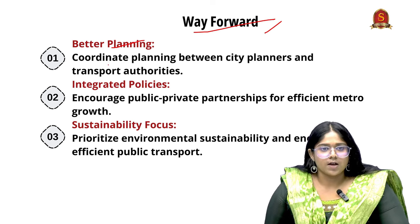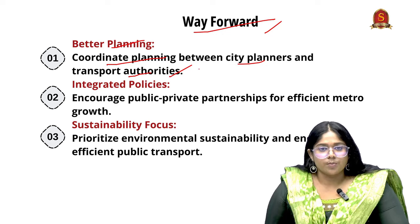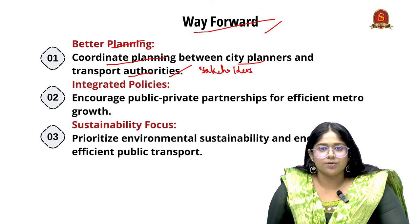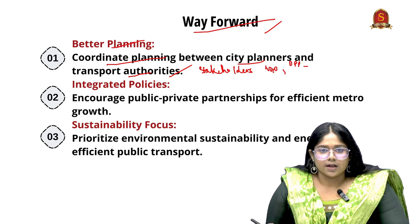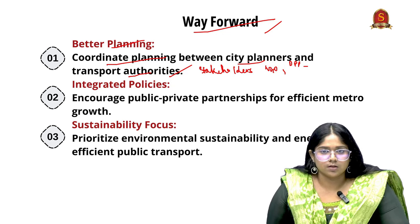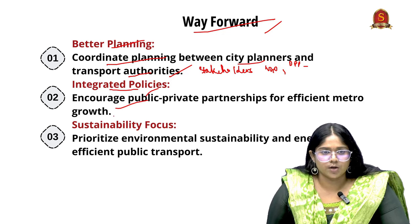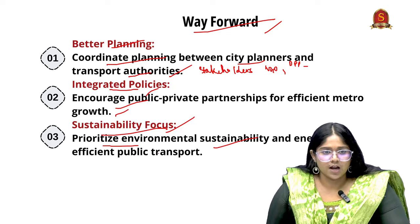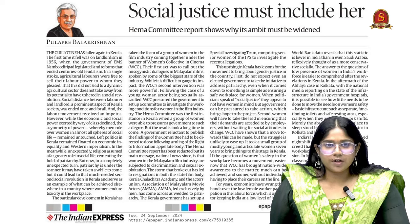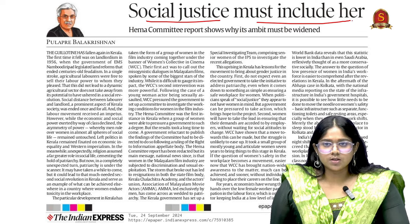Let us see a way forward. First is better planning — coordinated planning between city planners and transport authorities, involving stakeholders from different bodies such as NGOs and public-private partnerships, to integrate goals for TOD. Next is integrated policies encouraging public-private partnership for efficient metro growth. Next is a sustainability focus — prioritizing environmental sustainability and energy-efficient public transport. Now moving on to the final article titled 'Social Justice Must Include Her.'